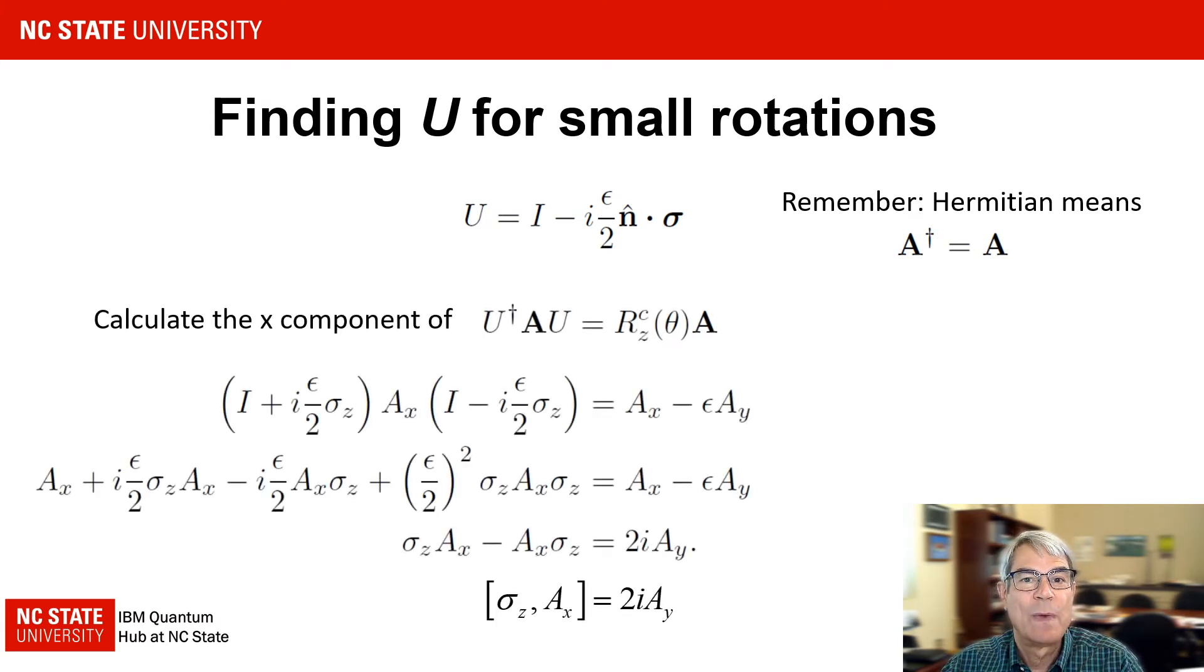For the case of a rotation around the z-axis, the x component of the rotated operator is given by this calculation. On the right-hand side of the first line, we have used the small angle approximations to the elements of the rotation vector RC. Going from the second to the third line, we have neglected terms of second order in epsilon. The square bracket notation on the last line is called a commutator and simply means sigma z Ax minus Ax sigma z as shown in the previous line.